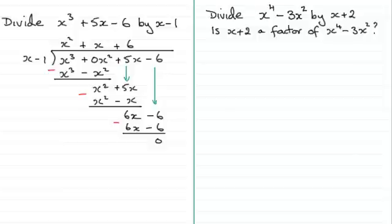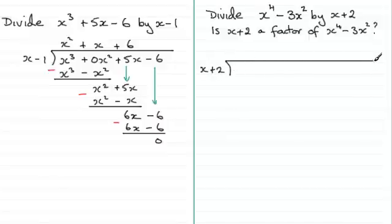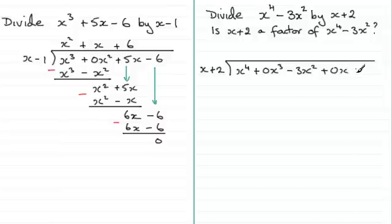OK, welcome back if you had a go at this one. So again, we put x plus 2 out the front of our division. For this one we start with x to the power 4. We have no x cubed term, so it's plus 0x cubed. We do have an x squared term: minus 3x squared. We have no x term and no constant on the end, so we add plus 0x and plus 0. That's how we set this up.